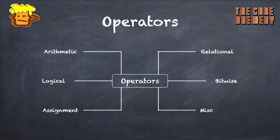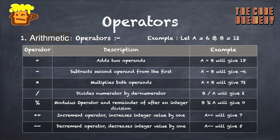First, we'll see about arithmetic operators. To understand them, we'll take an example where A equals 6 and B equals 12. The plus operator adds two operands, so A plus B will give us 18. The minus operator subtracts the second operand from the first, so A minus B will give us negative 6.